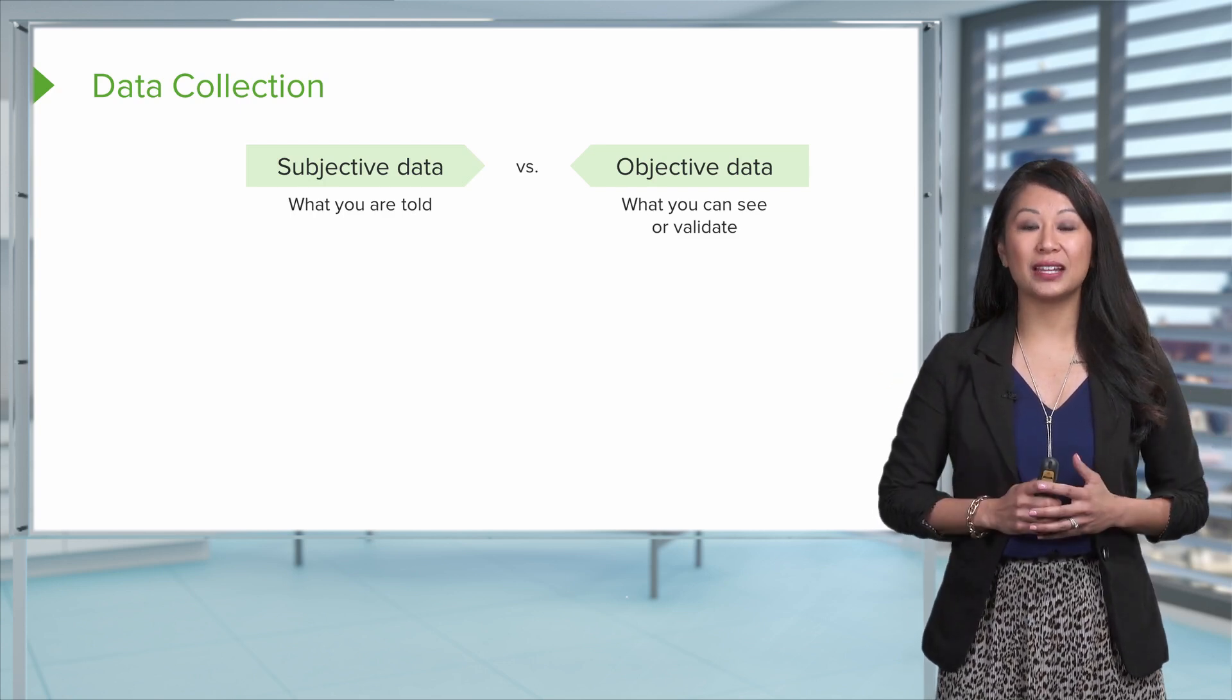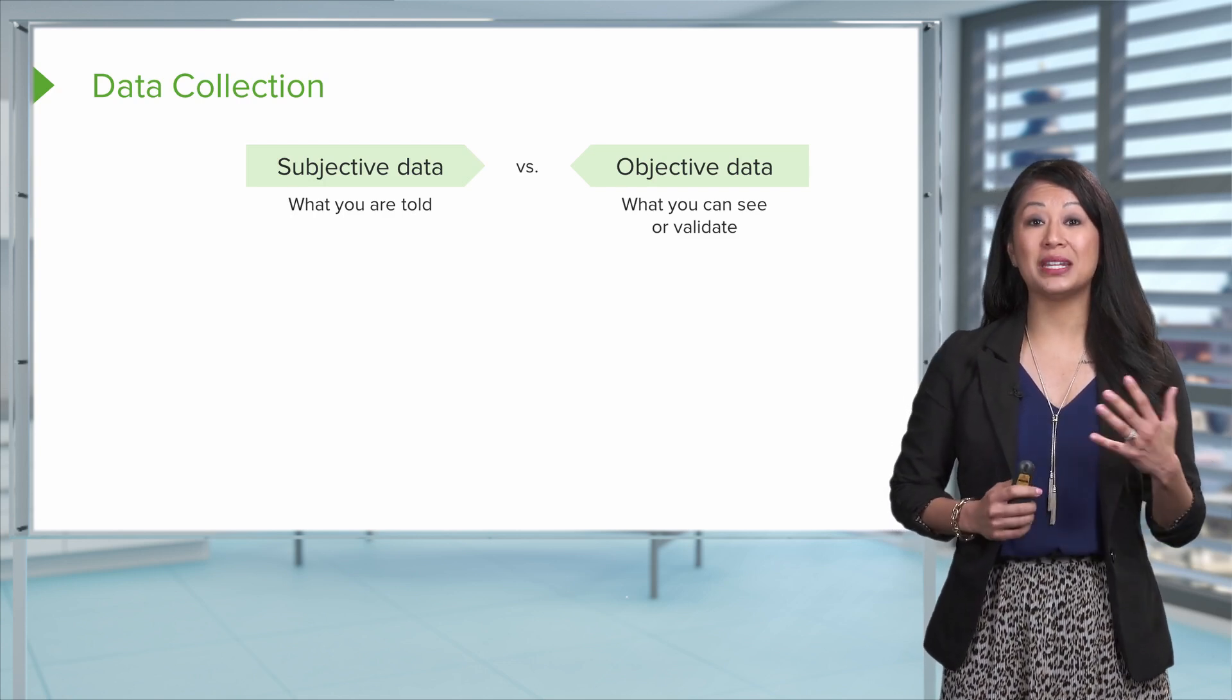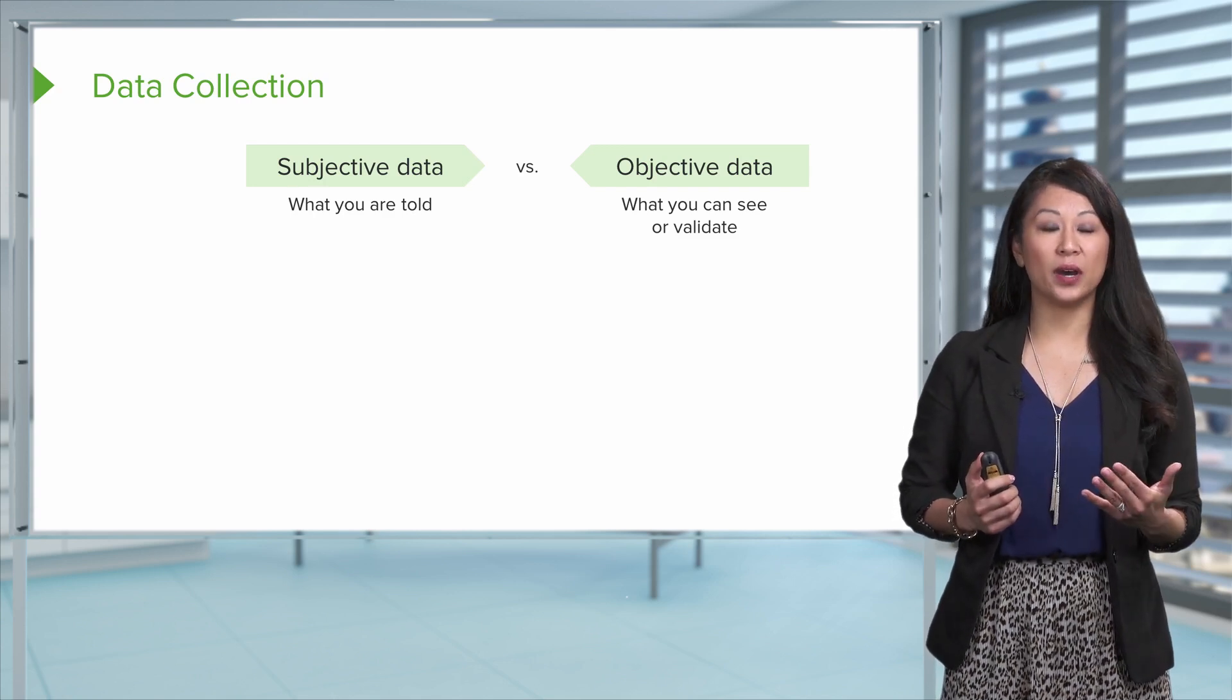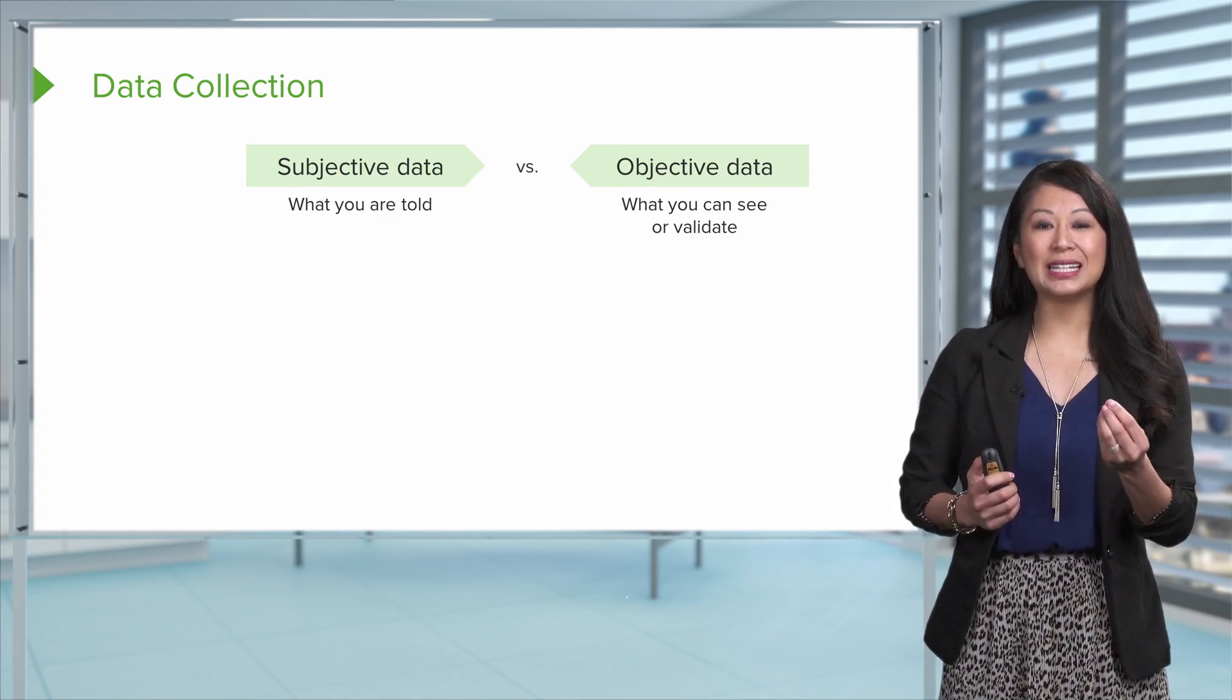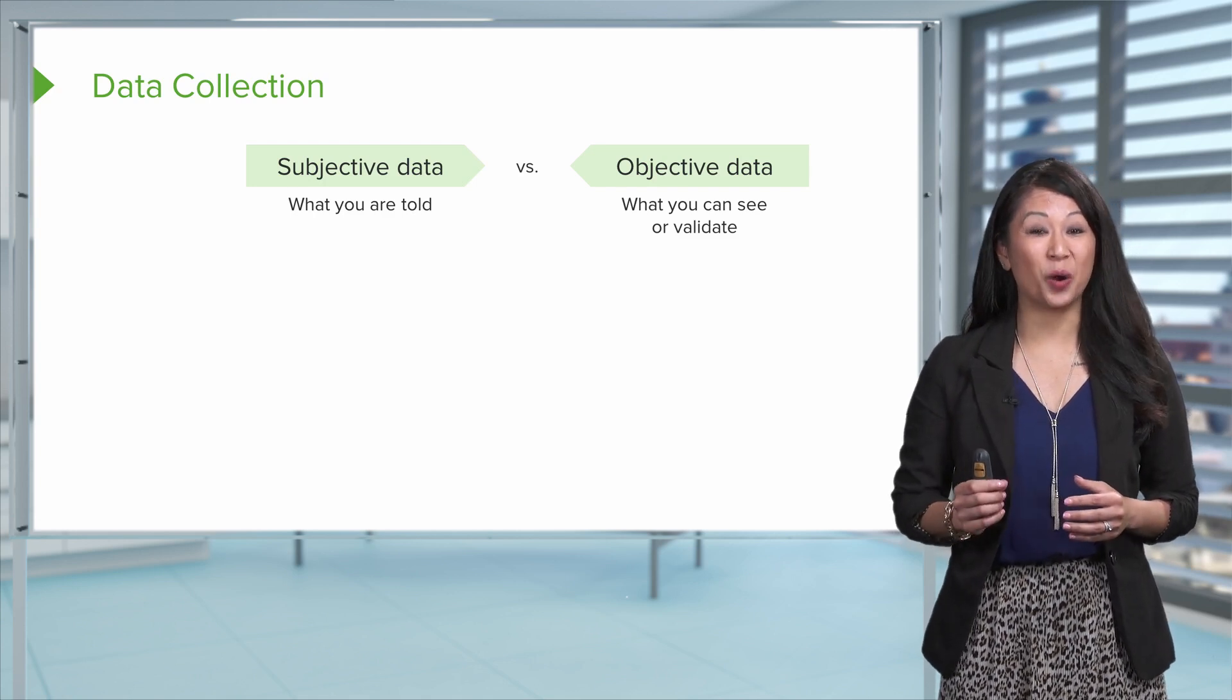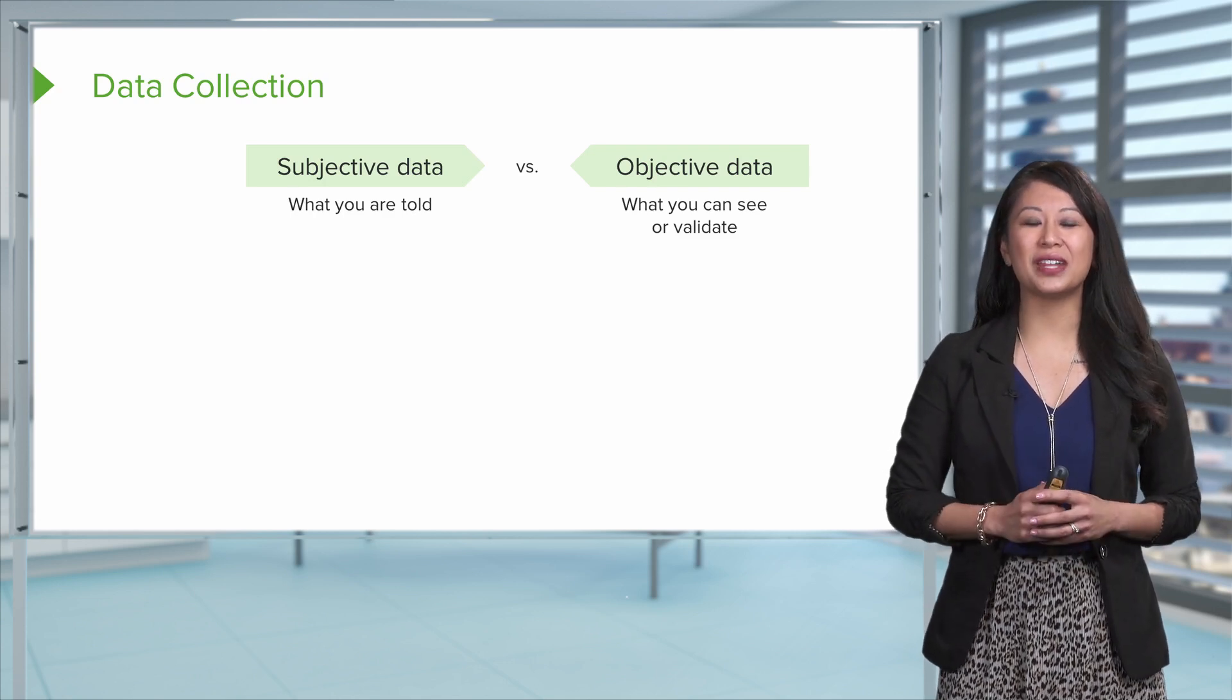Here's a great example I like to use personally, such as my patient may tell me I'm nauseated. Well, it's really kinda hard to tell if I look at someone, just me as the nurse, to really see that they're nauseated. I can see objectively, though, if the patient vomits. So that's a great example of subjective versus objective data.